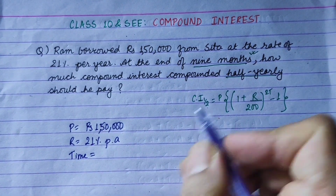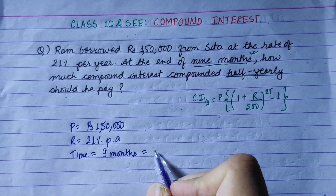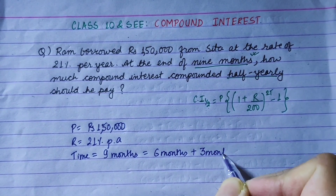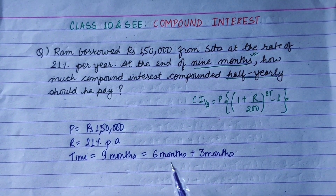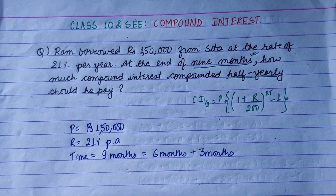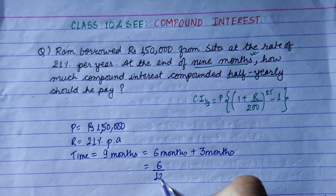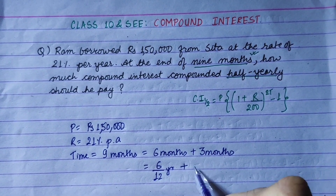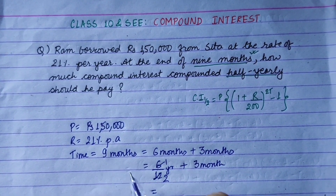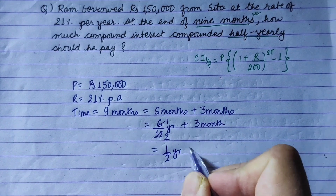We break 9 months into six months plus three months. Six months equals one half-year (6/12 = 1/2 year), and the remaining three months is a fractional period. So we have t = 1 half-year and m = 3 remaining months.